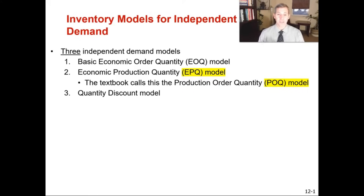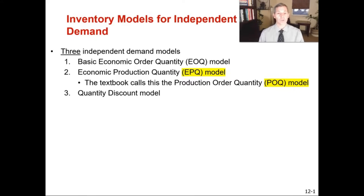The difference between the economic production model and the economic order model is exactly how it sounds. With the economic order quantity, you're ordering a specific amount generally from a supplier, so if you order 300 pieces you get a delivery of 300 pieces. With the economic production quantity, you're building or manufacturing this at your facility — you might create an order for 300 units but you can also use the products as they are finished. This is one of the three inventory models for independent demand.